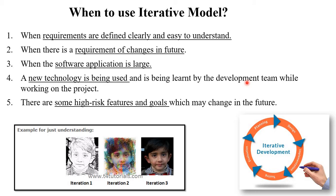If there are some high-risk features in a particular iterative model, those will be addressed in future iterations. For example, in iteration one, if there are any errors or new updates not available, you can move to iteration two, then again to iteration three, and so on. So iterative models are used only when these particular requirements are present.